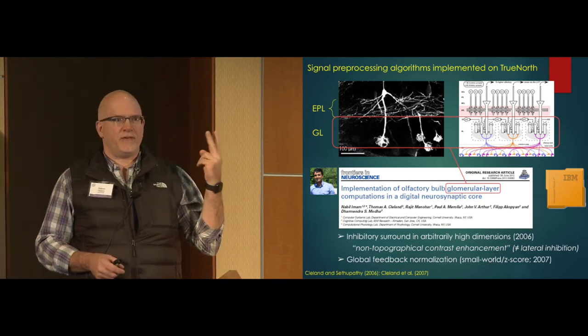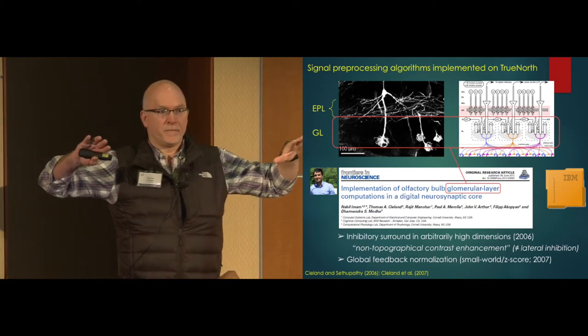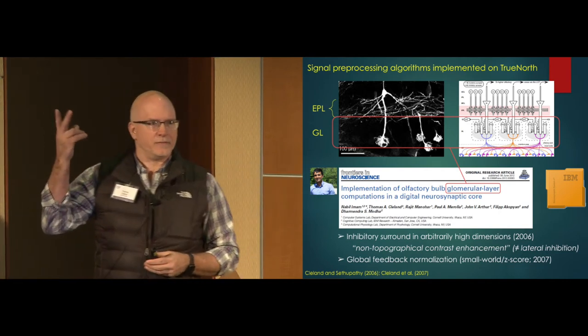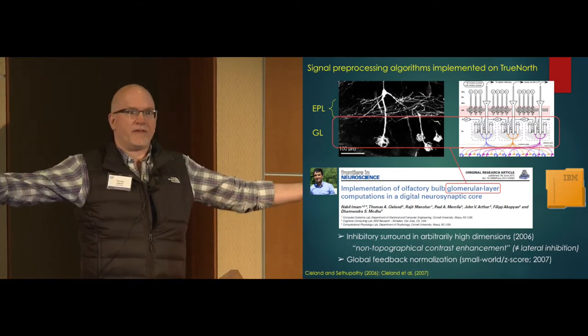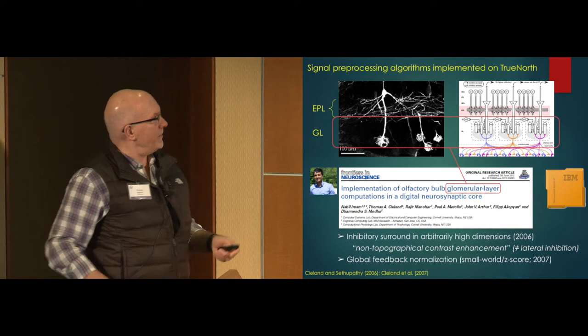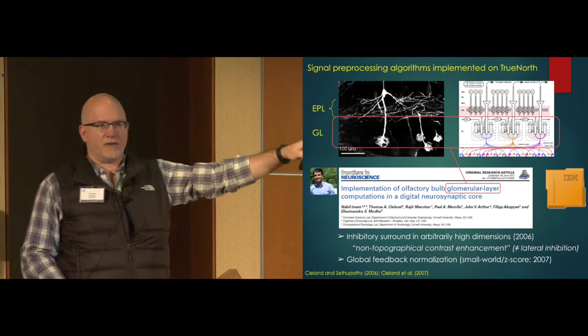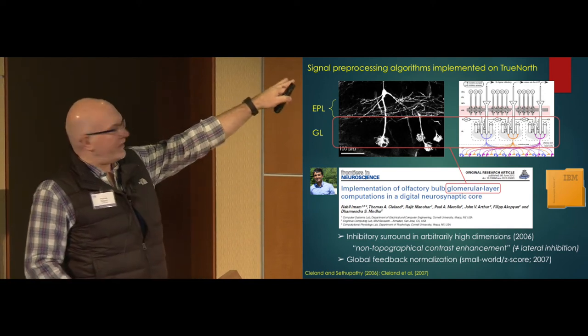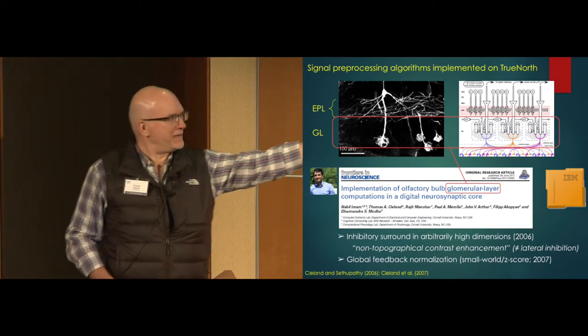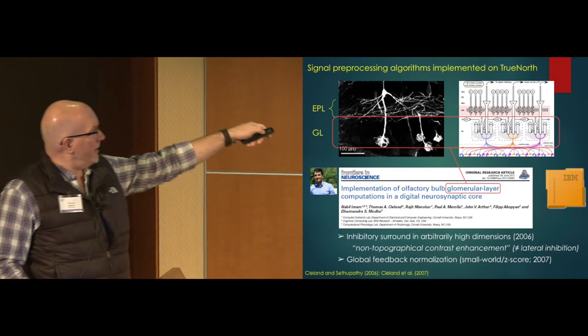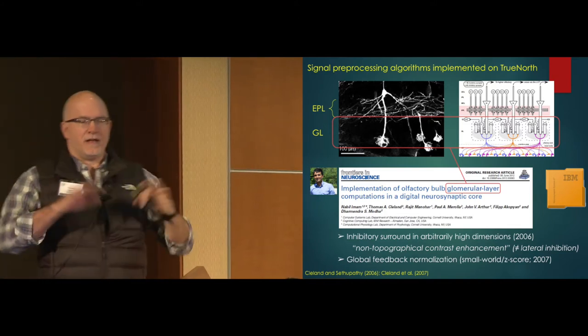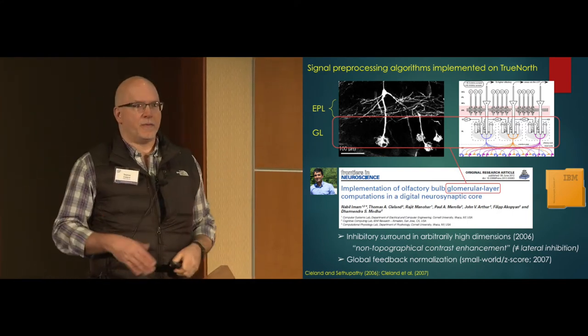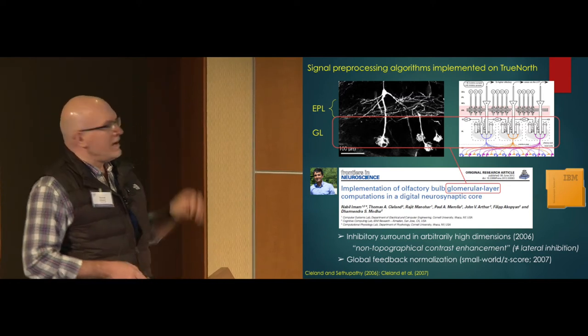I'm not going to go into these now because the learning is more interesting. But the two main pieces are an inhibitory surround in high dimensions. In other words, it's like lateral inhibition, except it can't work via lateral inhibition because that's an intrinsically two-dimensional process in a cortical tissue. And of course, we have this high-dimensional thousand glomerular signal coming in. So the contrast enhancement is the function. The second is a global feedback normalization, kind of analogous to batch normalization. But we did this in 2007, using a small world network to accomplish the effects of an all-to-all network without having anywhere near all-to-all connectivity.